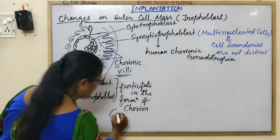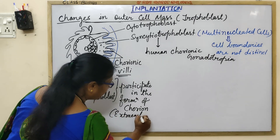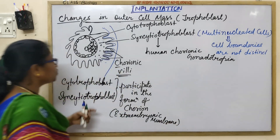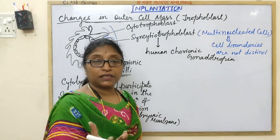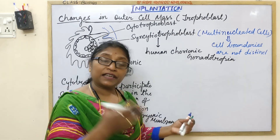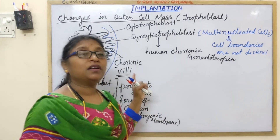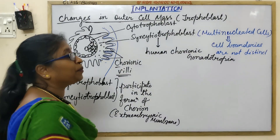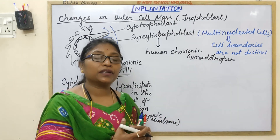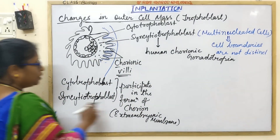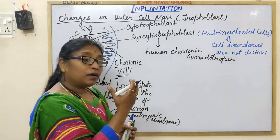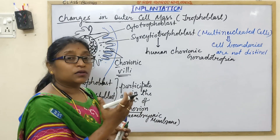This chorion is one of the extra-embryonic membranes. The embryoblast produces the proper embryo — our complete body is originally derived from the embryoblast. But from the trophoblast, supportive tissue is developed which supports the developing embryo and fetus during development within the womb. This extra-embryonic membrane, the chorion, participates in formation of the placenta and is the fetal contribution to the placenta.